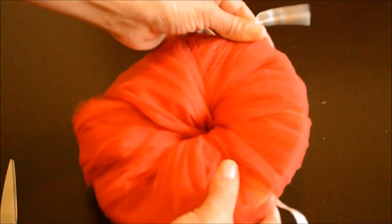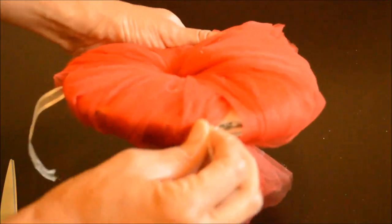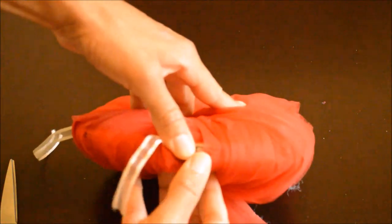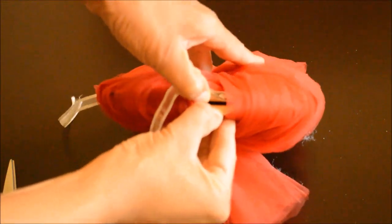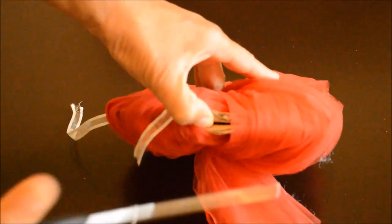Now what you would do is take the string that's on the right and pull it to the side. You can see the two pieces of cardboard right here. Start cutting in between the two pieces of cardboard.